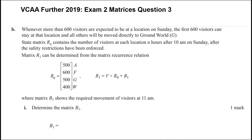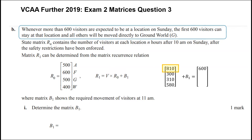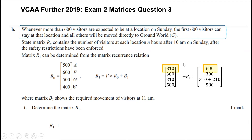The next question involves a location with more than 600 visitors: the first 600 can stay but all others must move to location G. The question asks us to determine matrix B1, which is the matrix added on to move those visitors. Going back to our state matrix, we had 810 people but only 600 can stay. The 300 and 580 don't need to do anything, but the 210 who exceed the limit at location A have to go to location G, so matrix B1 must reflect that change.